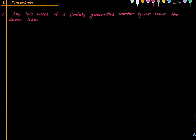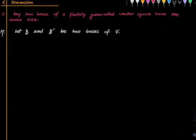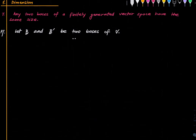The first conclusion we can draw is that any two bases of a finitely generated vector space have the same size. The proof: let B and B′ be two bases. First, think of B as a basis and B′ as just some linearly independent list — so the size of B′ is at most the size of B. Now reverse the roles. So these two inequalities give that B and B′ have the same size. Any two bases of a finitely generated vector space have the same size.